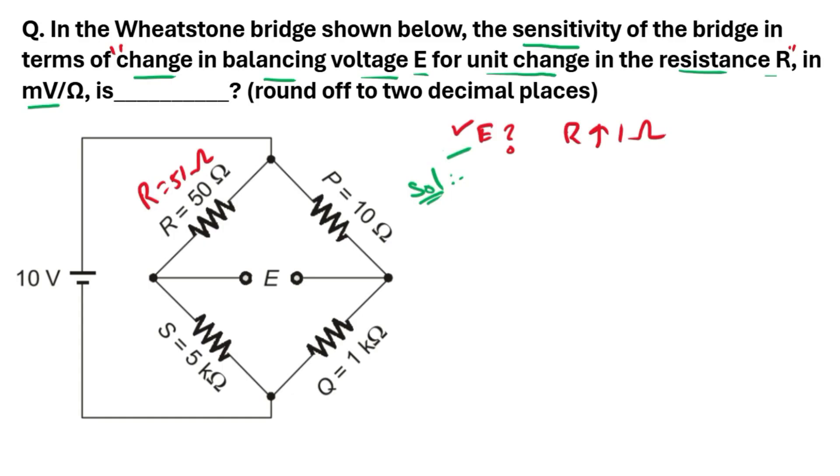Before going to find out the output voltage E, we need to find out whether this Wheatstone bridge is balanced or not. So we know the balanced condition is if R/S equals P/Q, then it is balanced. If not, it is unbalanced.